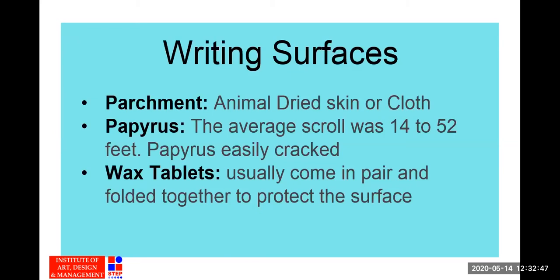On that papyrus surface they would write using vegetable dyes or fruit dyes. The average scroll was 14 to 52 feet long. Papyrus would easily crack so it was not very durable, but parchment was more durable. They also used wax tablets, where script was engraved on the surface of pairs of tablets which were then placed face-to-face and bound together.